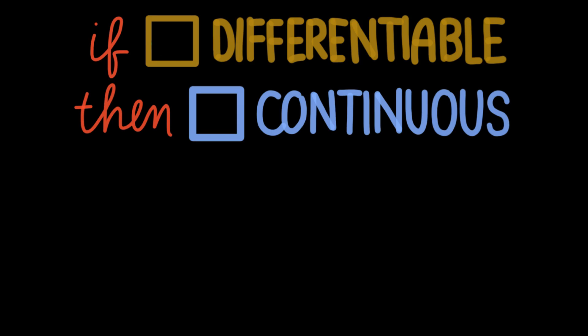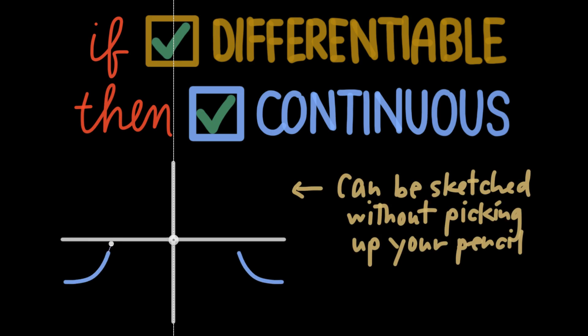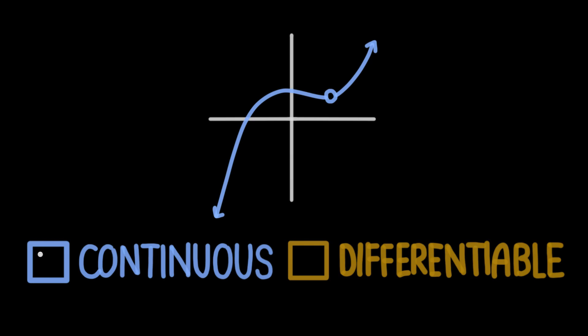The biggest thing that helps us out is determining whether or not a function is continuous. The rule is that if a function is differentiable, it must be continuous. To be continuous, remember, you must be able to draw the graph without lifting your pencil. This function is not continuous, and it makes sense that it wouldn't be differentiable, because you cannot find the derivative at this point. The function isn't defined there, so the slope definitely isn't defined.